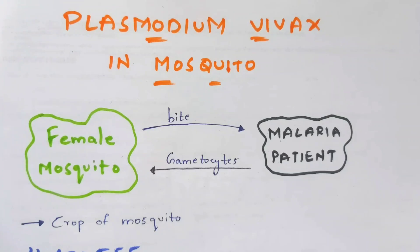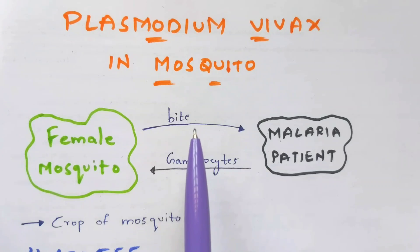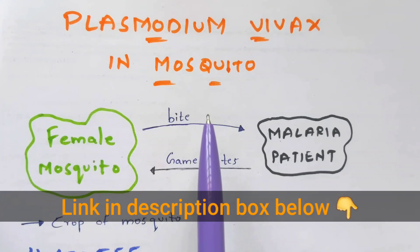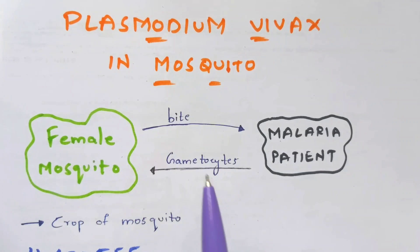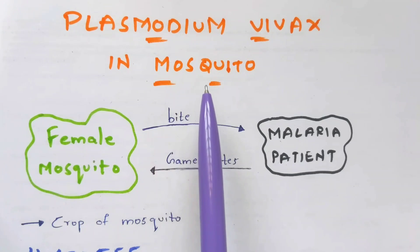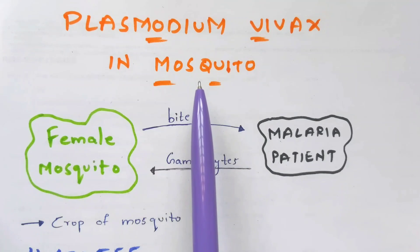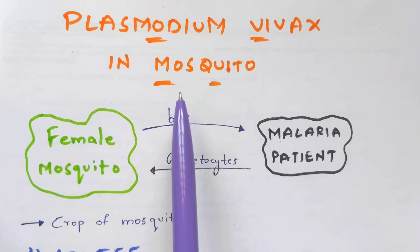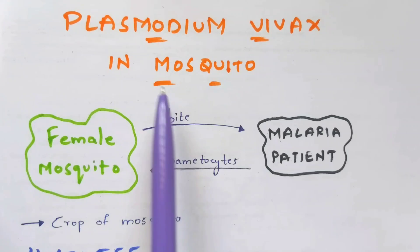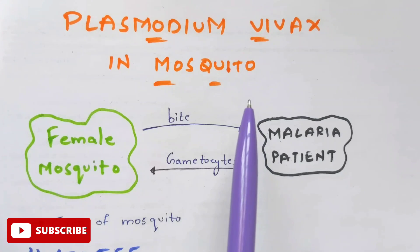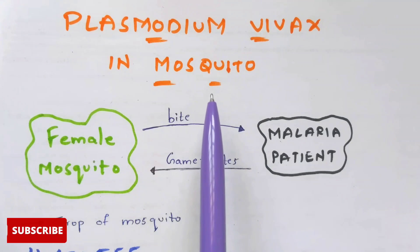Hi students, my name is Farindra. In this video I am going to explain about Plasmodium vivax in mosquito phase. In the previous video I explained about Plasmodium vivax in man phase, so people who didn't watch that video please watch it first — the link will be provided in the description box. Now, Plasmodium vivax will occur in two phases: one in human being and another in mosquito.